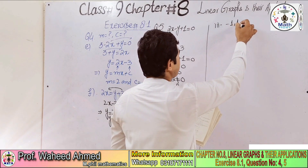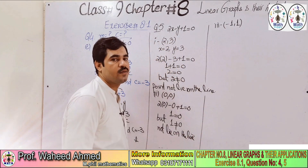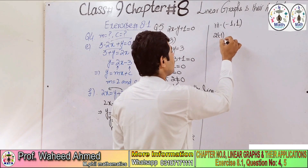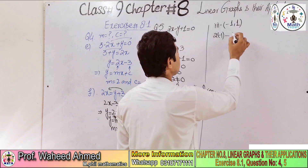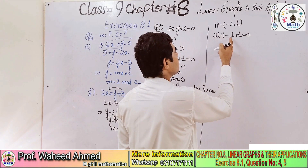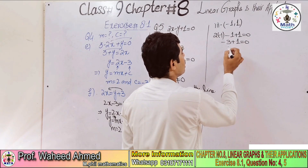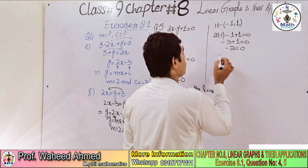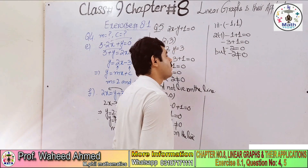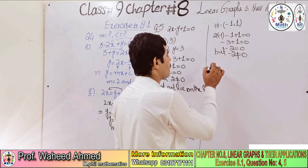Part 3: the point is (-1, 1). So x = -1 and y = 1. Applying to the equation: 2 × (-1) - 1 + 1 = 0. This gives -2 - 1 + 1 = -2, and -2 = 0. But -2 is not equal to 0, so this point does not lie on the line.